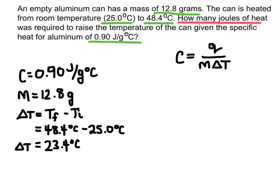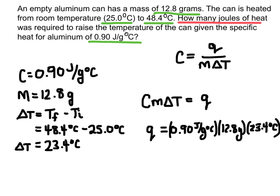And so I'm going to be solving for this value right here, this q. That represents the joules of heat. So I'm going to rearrange this equation by multiplying both sides by mass times delta T. That's going to move it over to this side and cancel it on this side. And now it's just a matter of plugging everything in that I have listed over on this side. So I can plug this into my calculator 0.9 times 12.8 times 23.4. And I get a heat of 270 joules.